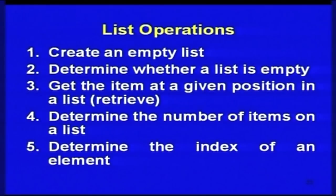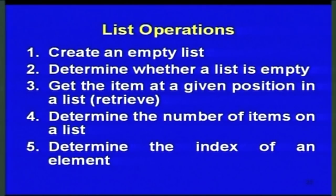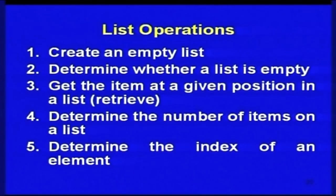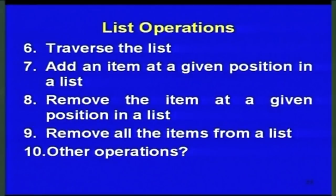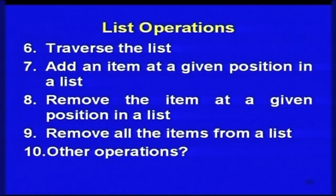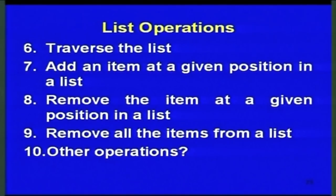Now we are going to go into more detail about list operations. First is create an empty list. Then determine whether the list is empty. Get an item at a given position, which is normally called retrieval. Determine the number of items — that is, count them. Given an element, find the index of that element. Traverse the list to find all elements. Then add an item at a given position, remove an item from a given position, and remove all items. These are some of the very common operations you do on any list.